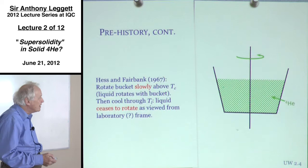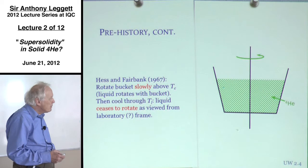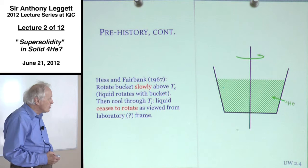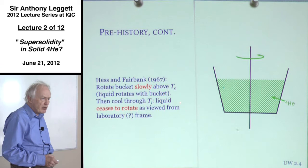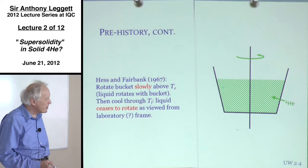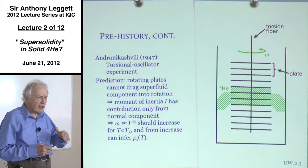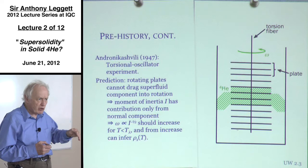There are many subsequent developments in theory and experiment on liquid helium, but one particular experiment is especially important: the Hess-Fairbank experiment in 1967. One should comment about the Andronikashvili experiment: there is a characteristic angular velocity corresponding very crudely to the velocity you'd have to attain to introduce a single vortex. In the Andronikashvili experiment, the characteristic velocity of the plates is always much greater than this characteristic quantum velocity.